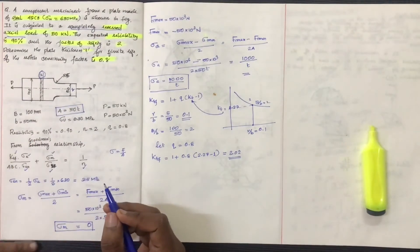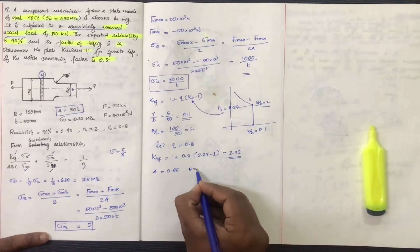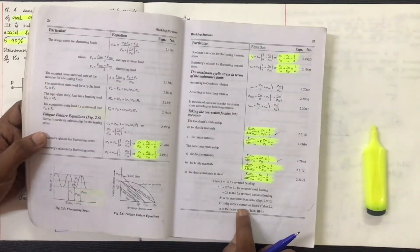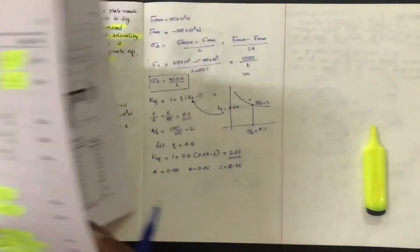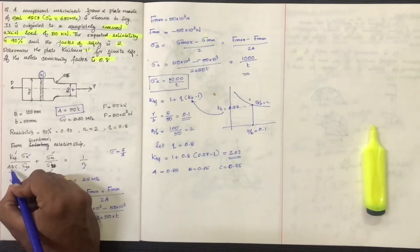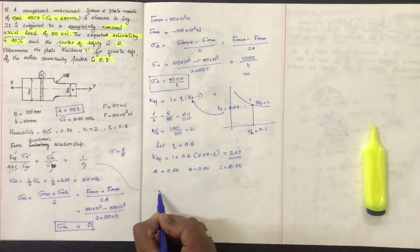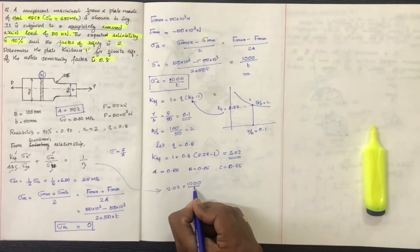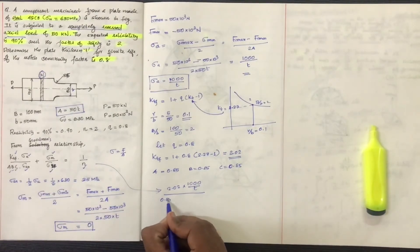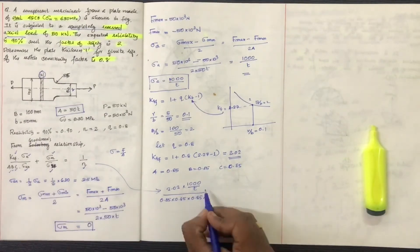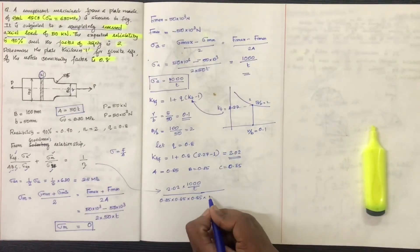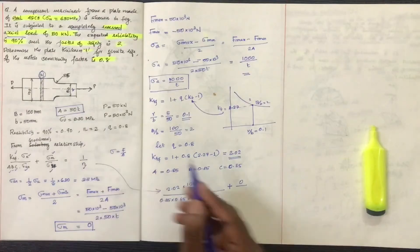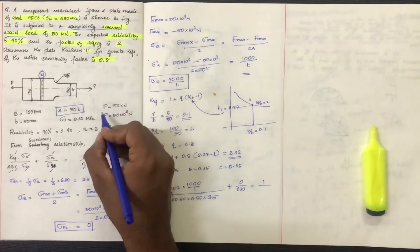The correction factors: A (loading correction factor) = 0.8 for axial loading, B (size correction factor) = 0.85, C (surface correction factor) = 0.85. Substituting into the Soderberg equation: 2.02 × (1000/T) divided by (0.85 × 0.85 × 315) plus Sigma M (0) by Sigma U (630), equals 1 by N equals 1/2.